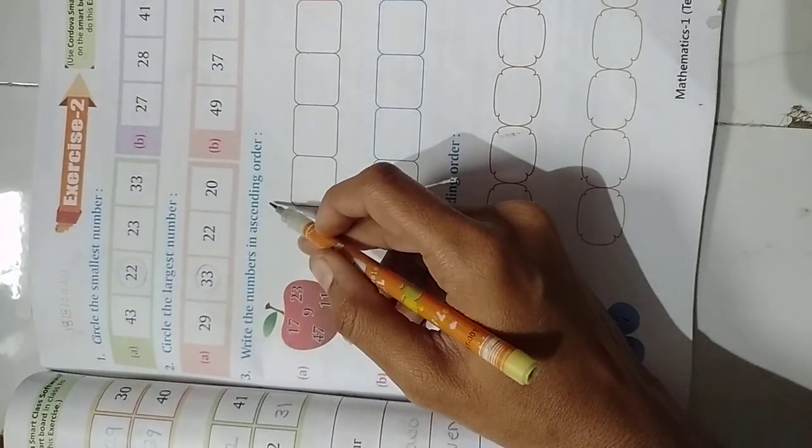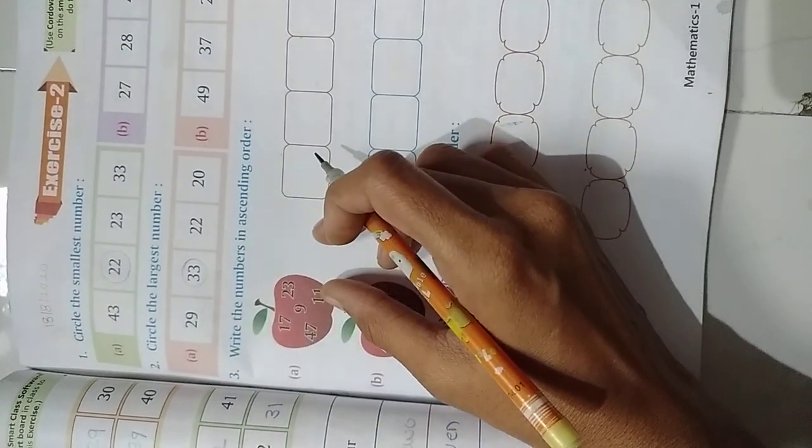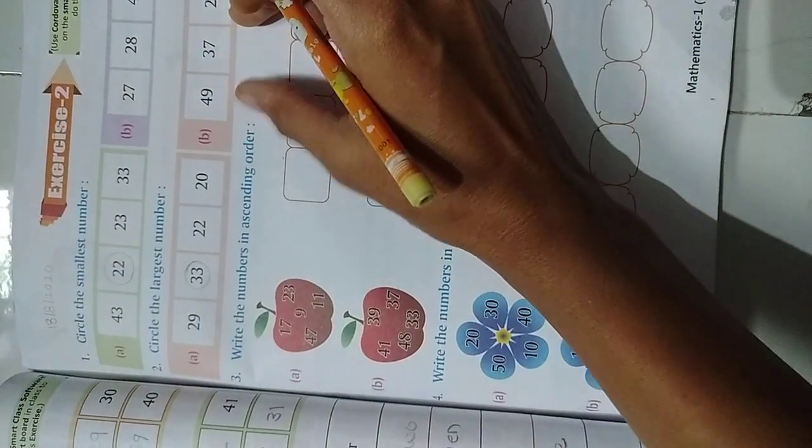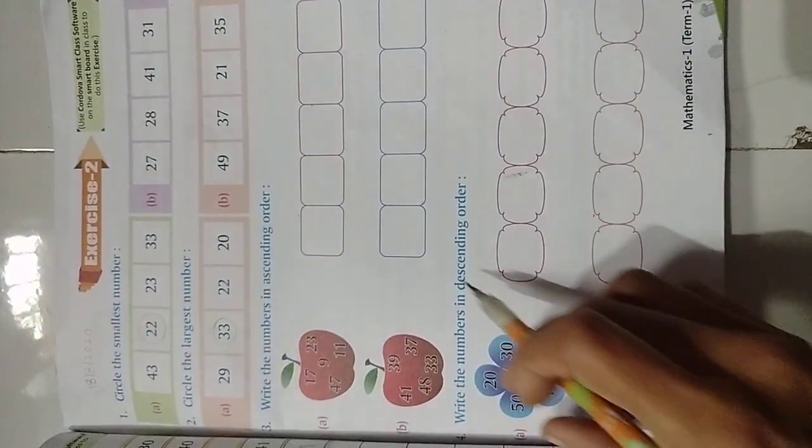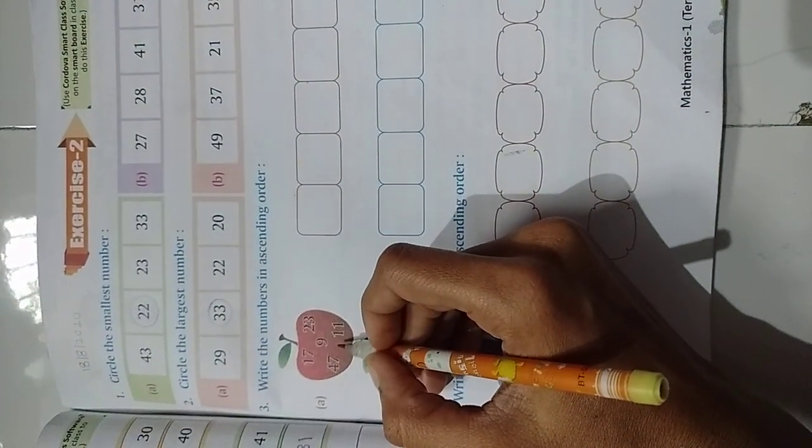First I would like to tell you ascending order means what? The number small. Starting from small number to big one. And last class we learn that. Smaller number to bigger number. Right. Now we are going to solve this exercise.